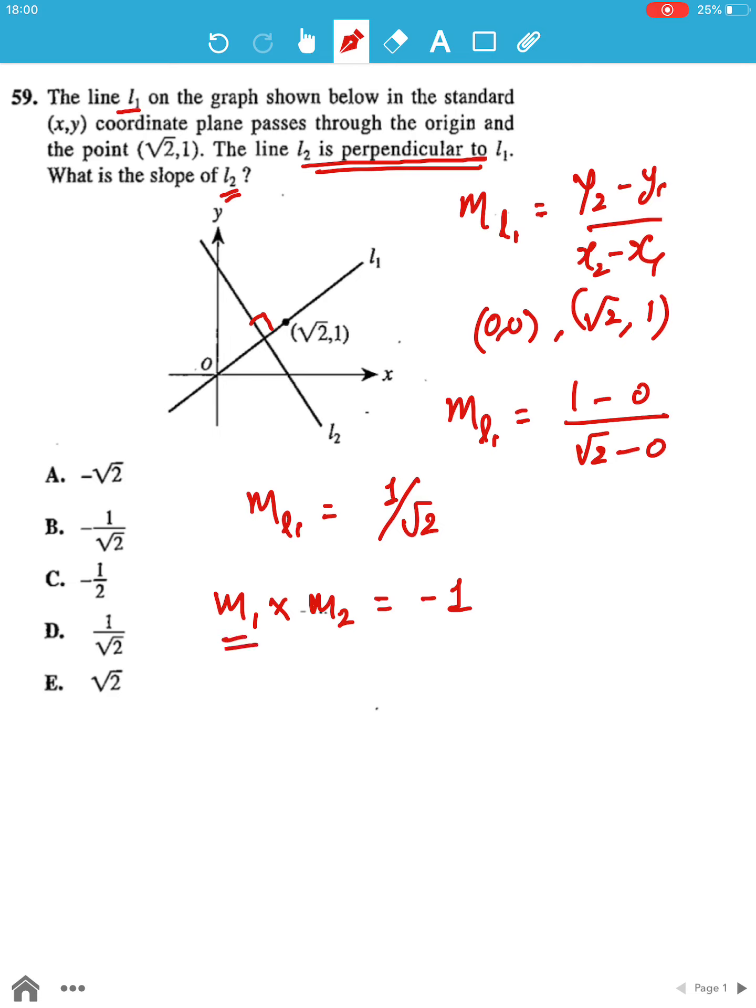So if I take M1 to be ML1, it will be 1 by root 2 into M of L2 is equal to minus 1. M of L2 is equal to minus root 2.